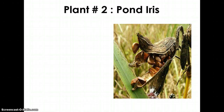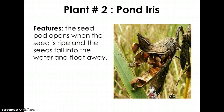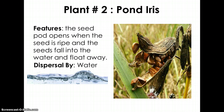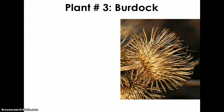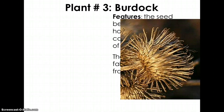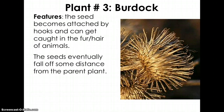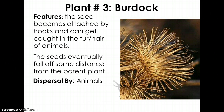Plant two is a pond iris — the seed pod opens when the seed is ripe and the seeds fall into the water and float away. The answer is water. Plant number three is a burdock — this seed becomes attached by hooks and can get caught in the fur or hair of animals, eventually falling off some distance from the parent plant. The answer is animal.